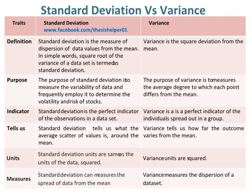Standard deviation is the perfect indicator of the observations in a data set. Whereas variance is a perfect indicator of the individuals spread out in a group. Standard deviation tells us what the average scatter of values is around the mean. Whereas variance tells us how far the outcome varies from the mean.